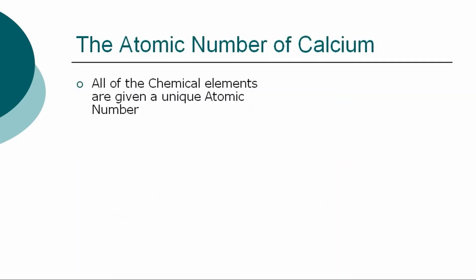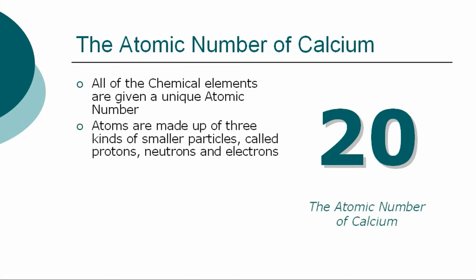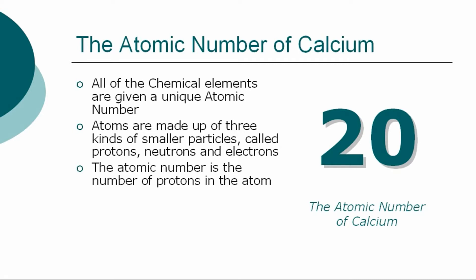All of the chemical elements are given a unique atomic number. The atomic number for calcium is 20. Atoms are made up of three kinds of smaller particles called protons, neutrons, and electrons. The atomic number is the number of protons in the atom.